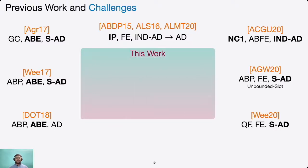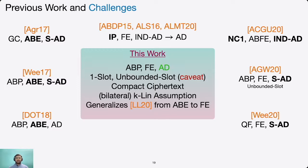In this work, we build FE for attribute-weighted sum functionality where weight functions are ABP, with adaptive simulation security. We first propose a one-slot scheme, then extend it to an unbounded slot scheme with a small caveat. Our scheme supports compact ciphertext, meaning ciphertext size does not grow with multiple occurrences of a particular attribute in the weight function. It is based on the k-Lin assumption and generalizes the ALMD20 framework from ABE to FE, and extends the indistinguishability-based security of LL20 to simulation-based security.